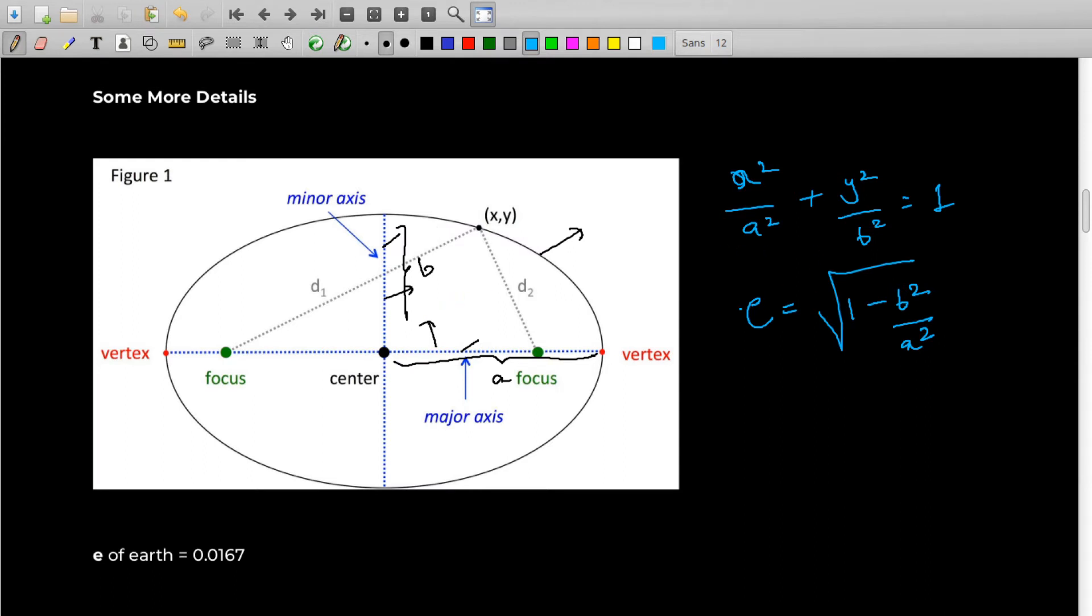You might be knowing that ellipse comes when we press the circle a bit. Now this e denotes that level of pressing. So if e ranges from 0 to 1, if e is 0 it's a circle, and as e goes towards 1 it becomes flatter and flatter.